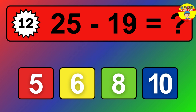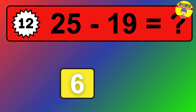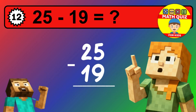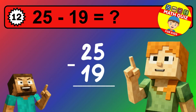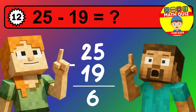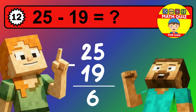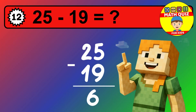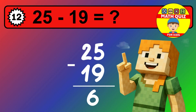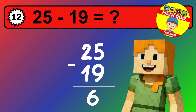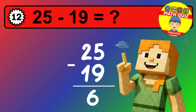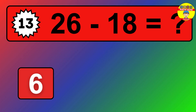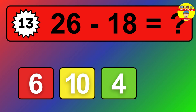Let's solve this step by step. We start with the units. 2 minus 6 is not possible, so we need to regroup. We take one 10 from the tens column. Now we have one tens, and the units become 12. Now we subtract. 12 minus 6 is 6. Then we go to the tens. 1 minus 1 is 0. The final answer is 6.